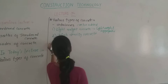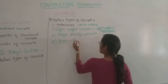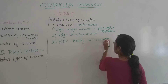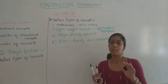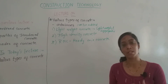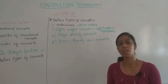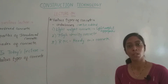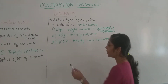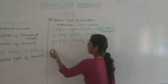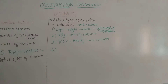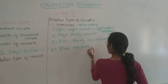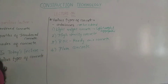The next type is RMC — Ready Mixed Concrete. In RMC, all dry ingredients are batched and mixed at an on-site plant, then transported and placed. Ready mixed concrete is produced economically on-site.